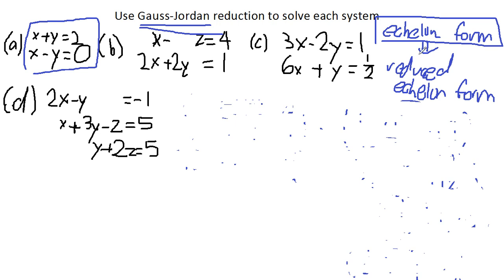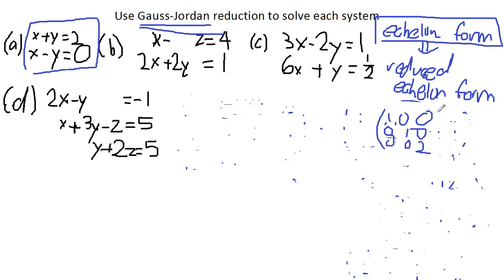So what do we mean by reduced echelon form? For echelon form, we've already learned it means that every row has a leading entry of 1. But for reduced echelon form, it's that for every row with the leading entry of 1, the column in which that 1 falls in only has 1 non-zero integer. So echelon form means every leading entry is 1, but for its column, 1 is only the non-zero integer — the same goes for each pivot column.